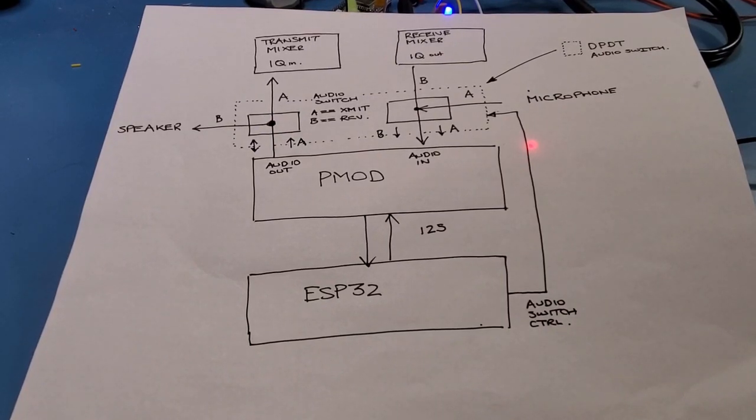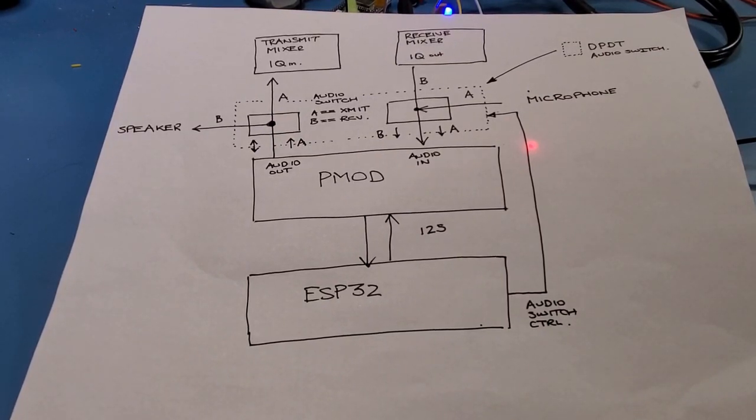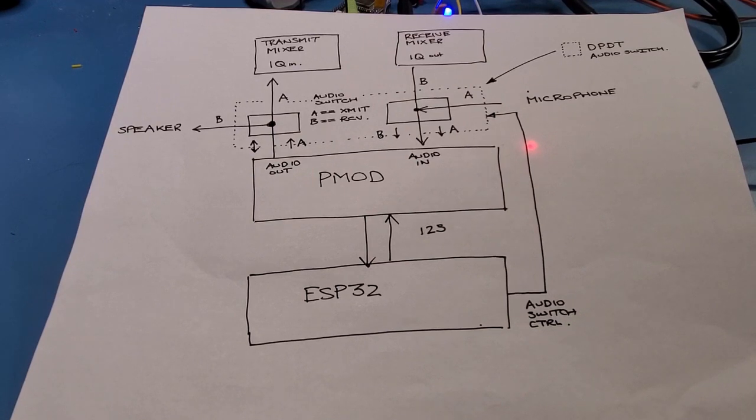In the last video I mentioned the need for an audio switch if I wanted both transmit and receive functionality on this ESP32 radio. So in this video I'm going to walk through briefly describing the audio switch in the radio and there's a sort of a module diagram right here.